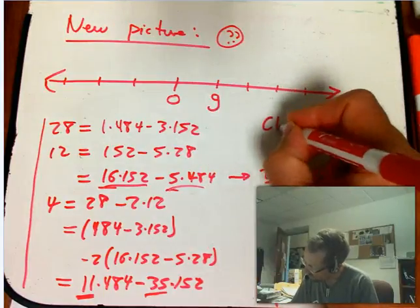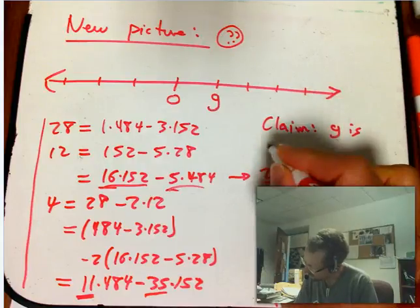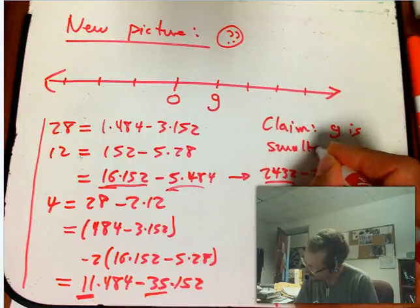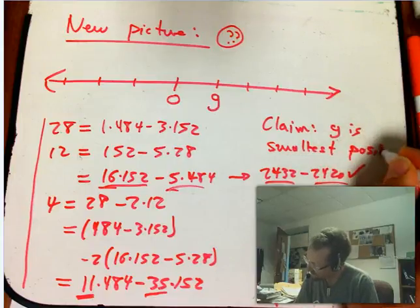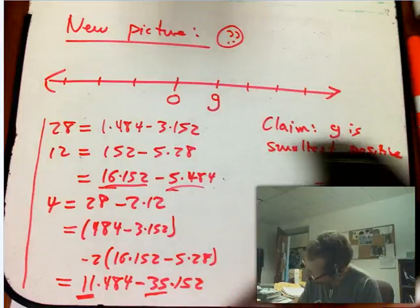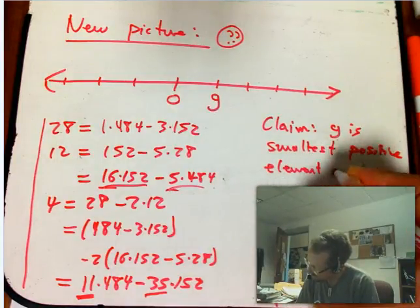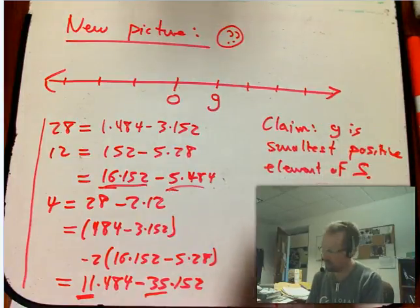I claim it's going to be the G is the smallest positive element of S. Let me just, we don't really need that little sidebar anymore.